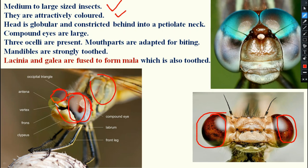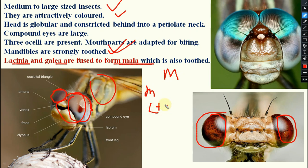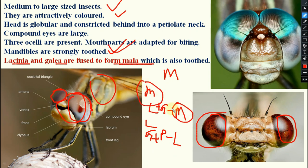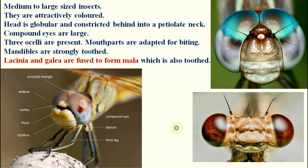Mandibles are strongly toothed, which is why the order is known as Odonata. In the maxilla, lacinia and galea are fused to form the mala. In case of the labium, glossa and paraglossa make the ligula. Remember: M for maxilla, M for mala; L for labium, L for ligula.